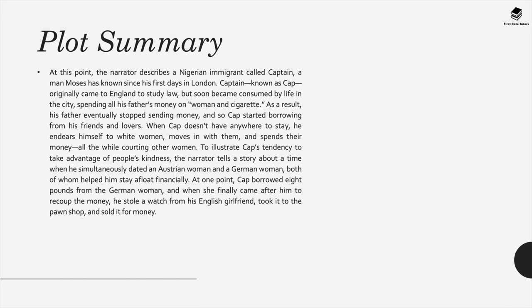At this point, the narrator describes a Nigerian immigrant called Captain, or Cap, an old man Moses has known since his first days in London. Cap originally came to England to study law but soon became consumed by city life, spending all of his father's money on women and cigarettes. As a result, his father eventually stopped sending money, so Cap started borrowing from his friends and lovers. When he doesn't have anywhere to stay, he endears himself to white women, moves in with them and spends their money, all the while courting other women. The narrator tells a story about a time when Cap simultaneously dated an Austrian woman and a German woman; he borrowed eight pounds from the German woman, and when she came after him to recoup the money, he stole a watch from his English girlfriend and took it to the pawn shop.